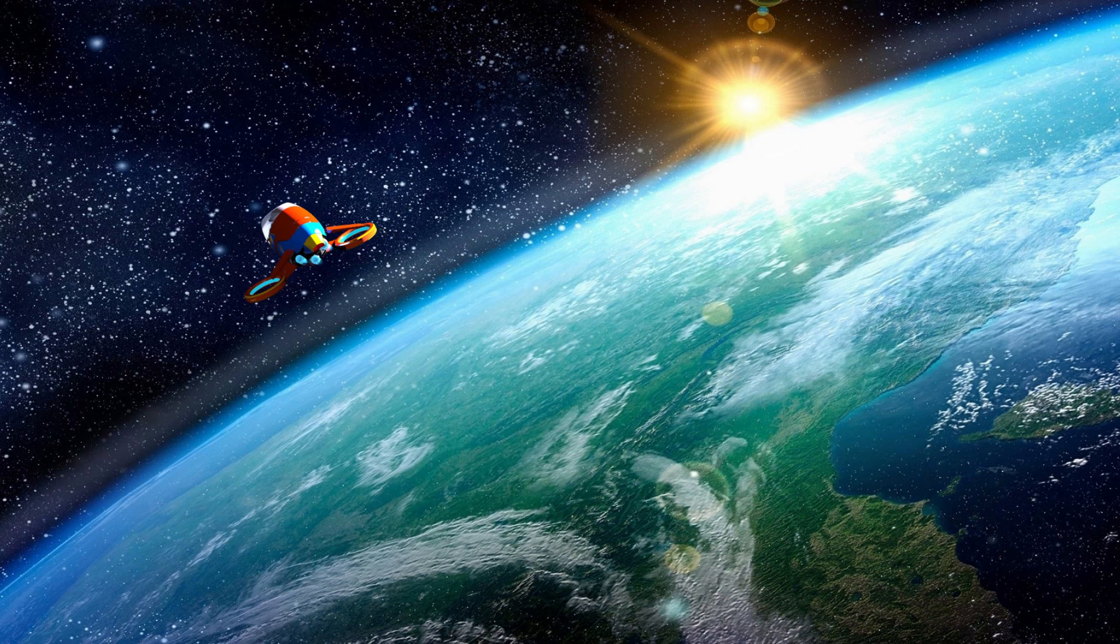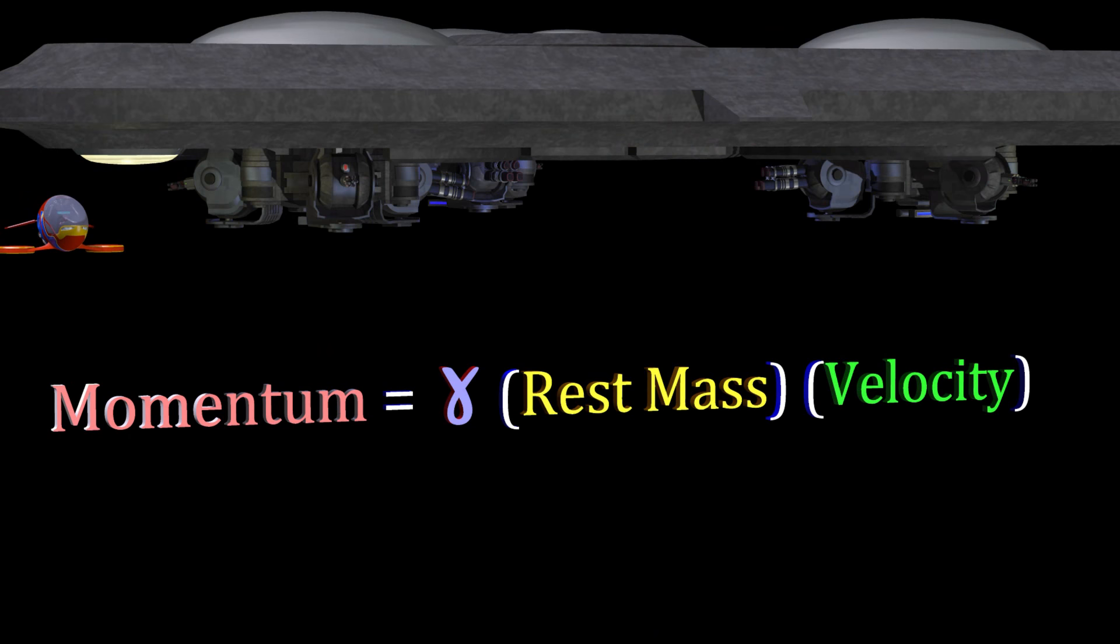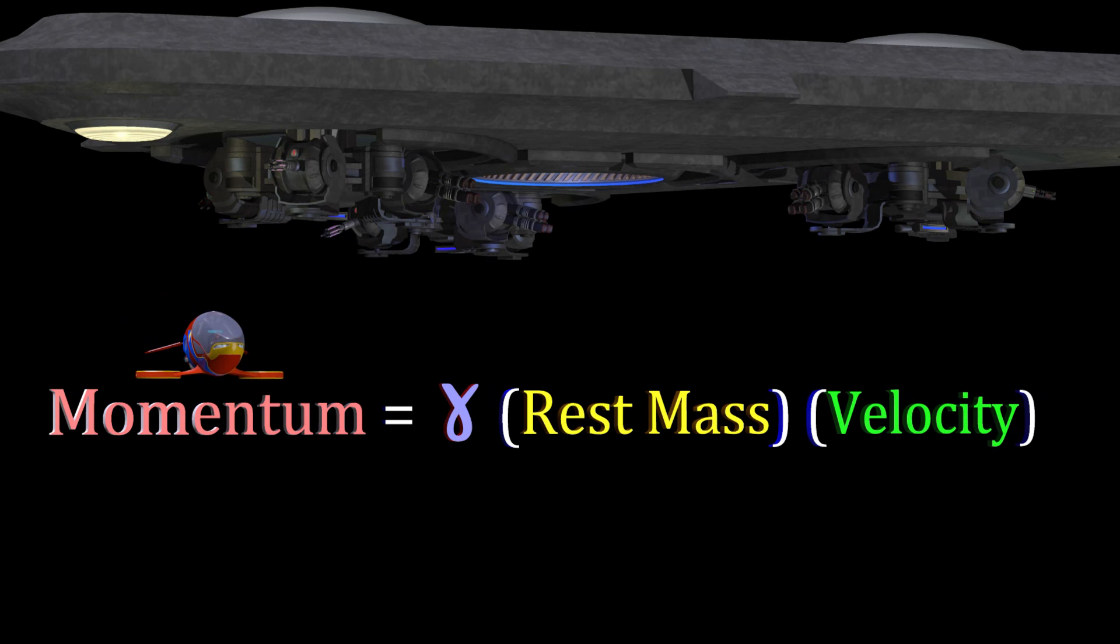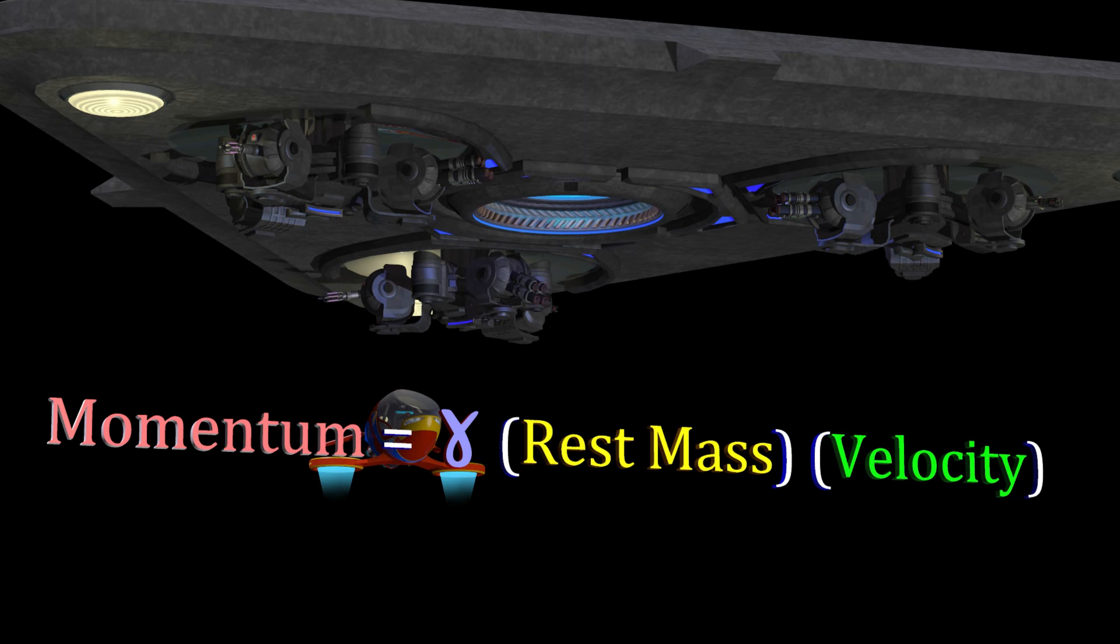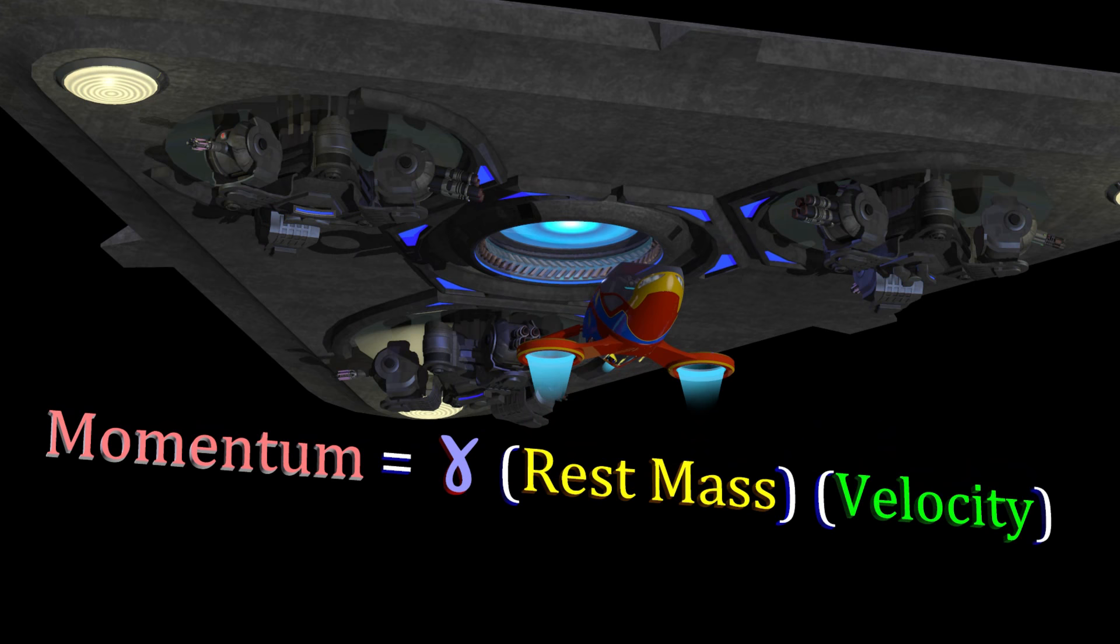The momentum is equal to gamma multiplied by the rest mass multiplied by velocity. At speeds far below the speed of light, gamma is approximately equal to one, and the equation reduces to the familiar relationship stating that momentum is mass multiplied by velocity.